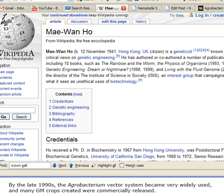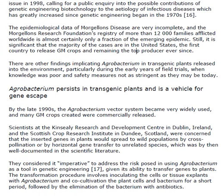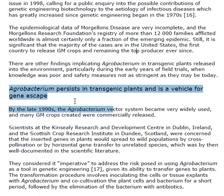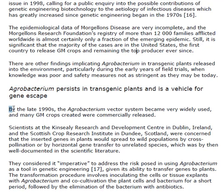Agrobacterium persists in transgenic plants and is a vehicle for gene escape. By the late 1990s, the Agrobacterium vector system became very widely used on many GM crops — that's genetically modified crops. This was a created method for commercial genetically modified crop release.